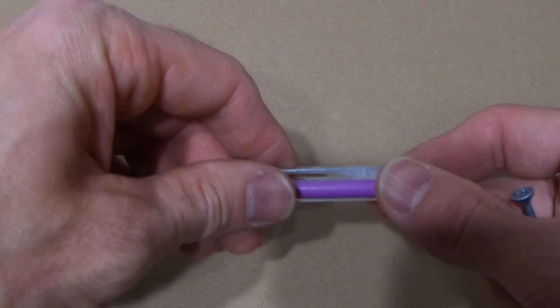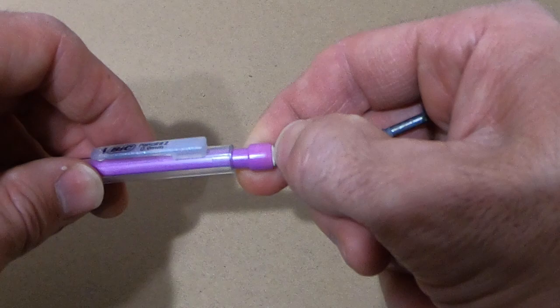All right guys, so you have a mechanical pencil and you want to add some lead to it, but the eraser has been used all the way down so you can't get it out. So I'm going to show you how to get that eraser out.